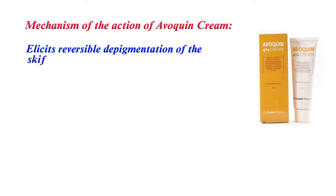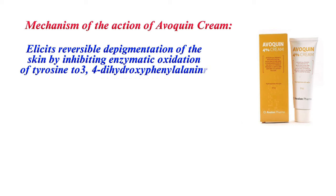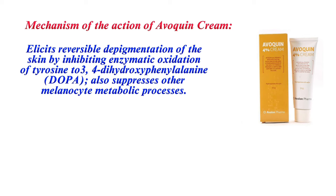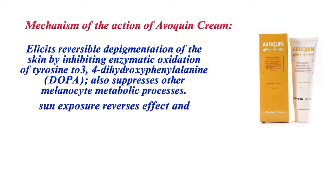Mechanism of action of Avaquin cream: it elicits reversible depigmentation of the skin by inhibiting enzymatic oxidation of tyrosine to 3,4-dihydroxyphenylalanine (DOPA). It also suppresses other melanocyte metabolic processes. Sun exposure reverses the effect and causes repigmentation.